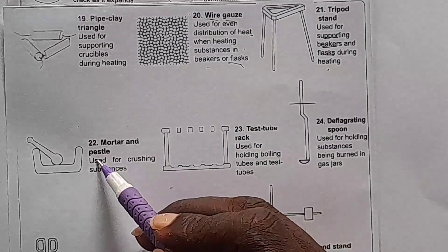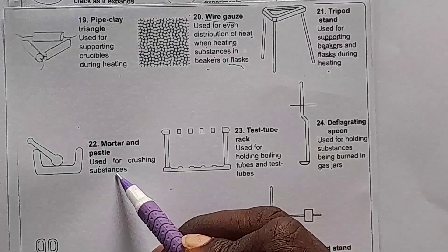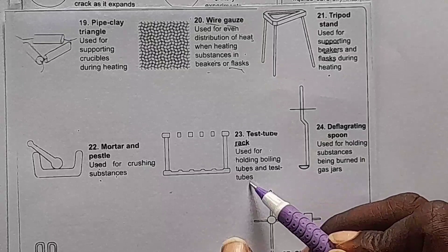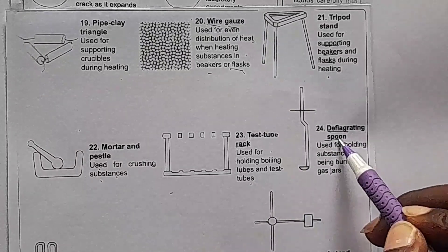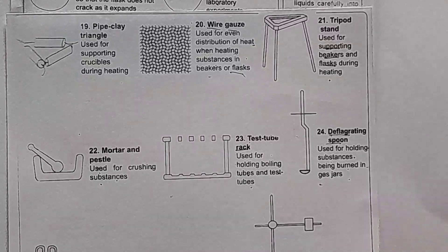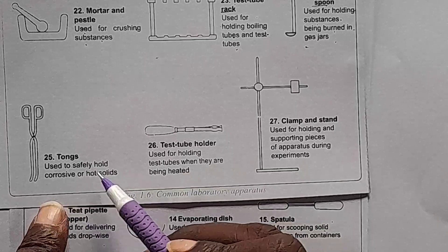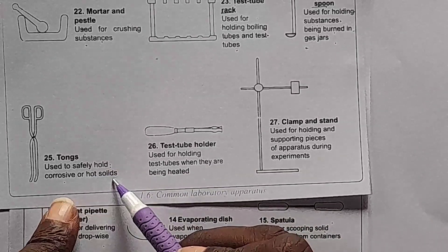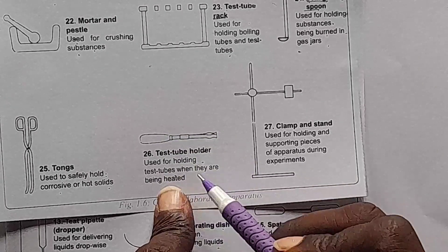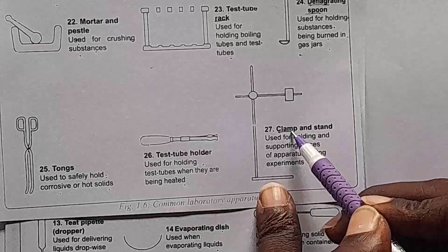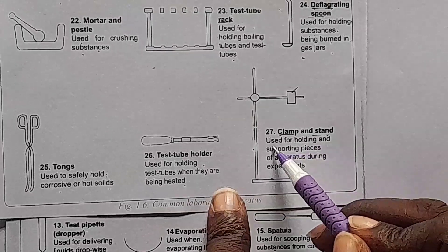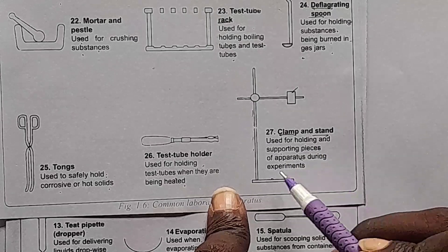Number twenty-two, we have mortar and pestle. They are used for crushing substances. Here, we have a test tube rack. A test tube rack is used for holding boiling tubes and test tubes. Here, we have a deflagrating spoon. It's used for holding substances being burned in a gas jar. Then, number twenty-five, tongs are used to safely hold corrosive or hot solids. Number twenty-six, test tube holder — it's used for holding test tubes when they are being heated. Finally, we have clamp and stand. The clamp and stand are used for holding and supporting pieces of apparatus during experiments.